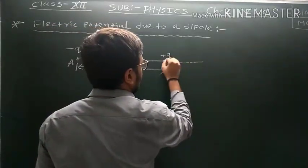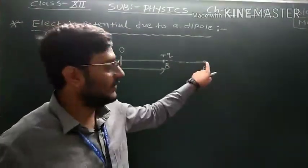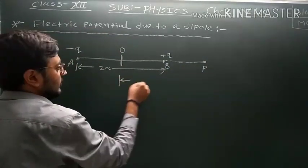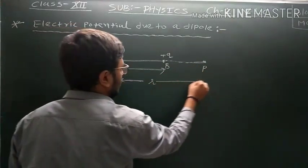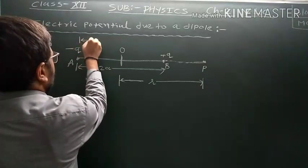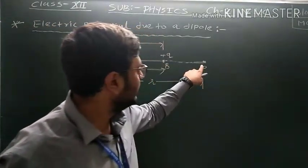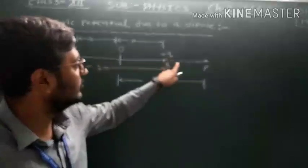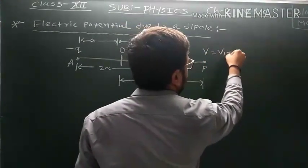Suppose we have one point P which lies on the dipole axis. The distance between the midpoint of the dipole and point P is R, and the half-length of the dipole is a. We find the total electric potential due to these two charges, minus Q and plus Q, at point P: V equals V1 plus V2.